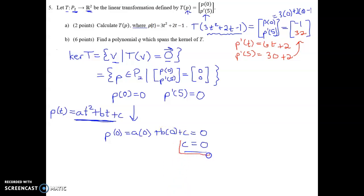So using this, we know now that the constant term here must be 0 if P is in the kernel. Okay, now looking at that second component. So the derivative.